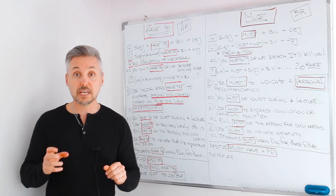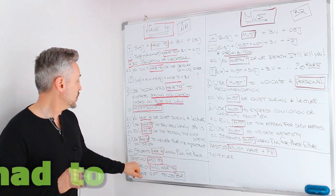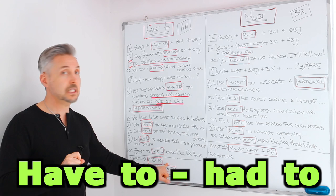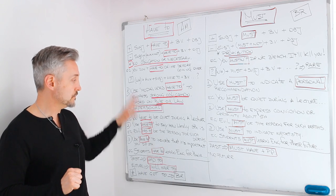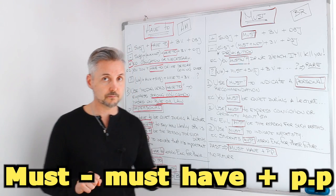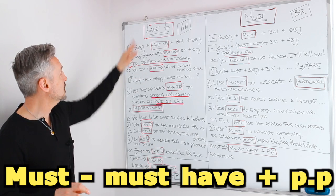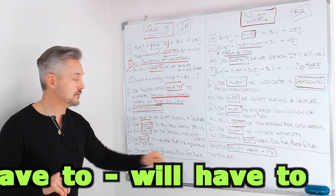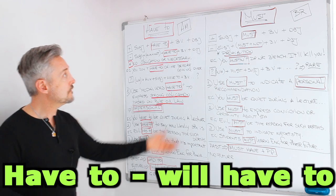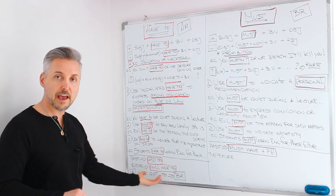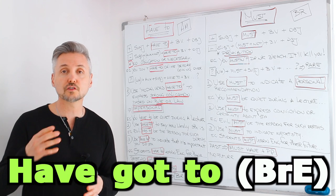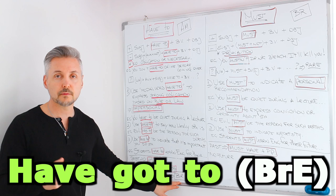They can both be used with the past. The past of have to is had to — remember that in a question or negative sentence you need did for the past. If you use must with the past, it would be must have plus past participle. For the future with have to, we use will have to — for example, I will have to do something next week. For must, we don't have a future form, so we use have to instead. Also, in British English you can use have got to instead of have to — it's the same thing.